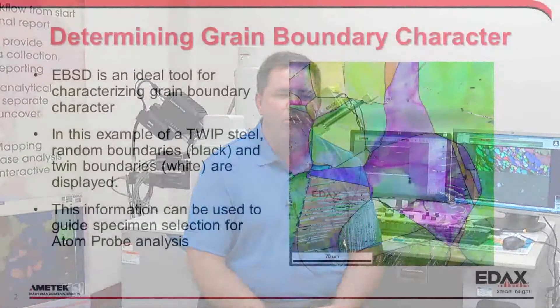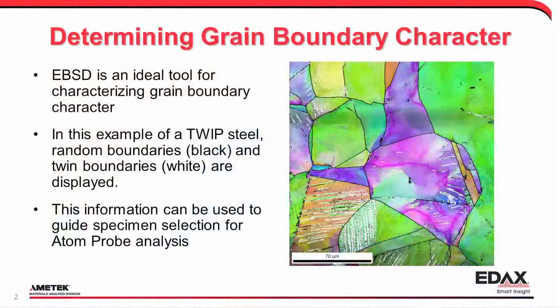This analysis requires that the grain boundary of interest be located within 200 nanometers of the specimen tip for effective characterization. Atom Probe Assist helps make this preparation easier and more efficient, and can be used to characterize the grain boundary structure and character of a material, enabling users to better select a specific grain boundary type for atom probe analysis.